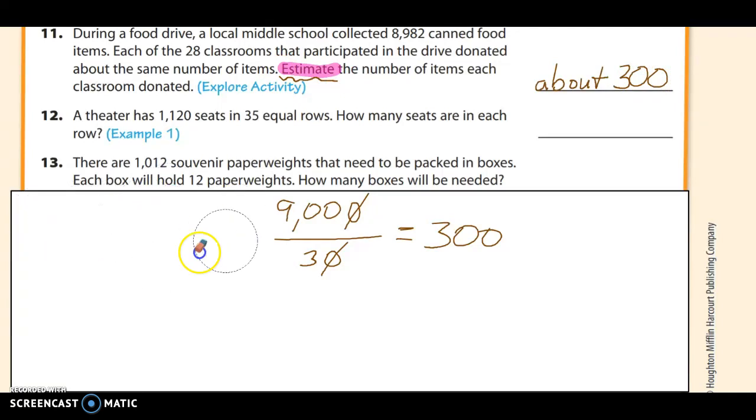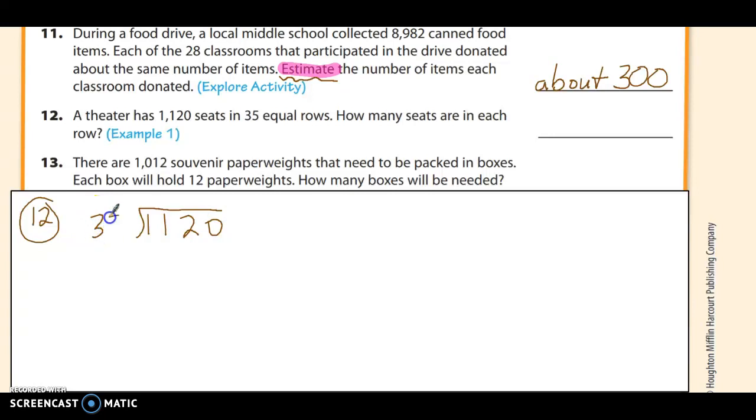Number 12 is not going to say estimate. A theater has 1,120 seats in 35 equal rows. That's going to be 1,120 divided by 35. How many seats are in each row? That is division. 35 doesn't go into 1 or 11, but it does go into 112, and I'm thinking 3 times. 35 times 3 is...3 times 5 is 15, 3 times 3 is 9, plus 1 is 10. I get 105, which is less than 112. That's perfect. So I put my 3 here. 3 times 35 is 105. Now subtract. 12 minus 5 is 7, 10 minus 10 is 0. Drop the 0. 35 goes into 70 twice. 2 times 35 is 70. The answer is 32. It's a word problem, so we answer in a word. How many seats are in each row? 32 seats.